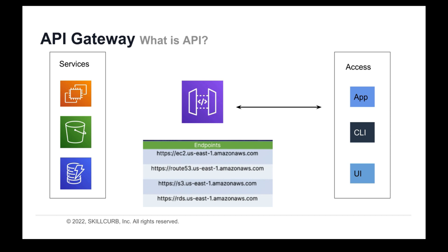So when we access S3, for example, we do so through the API, and these APIs are also performing authentication — usually with our username and passwords, but they can also be key-based as well. And once we authenticate, then we are authorized to perform actions. So each time we interact with AWS, we have to verify who we are and what we are allowed to do.